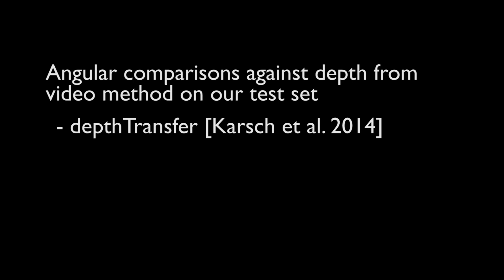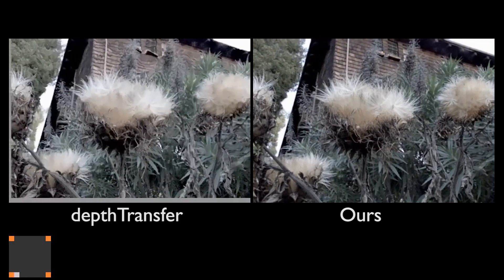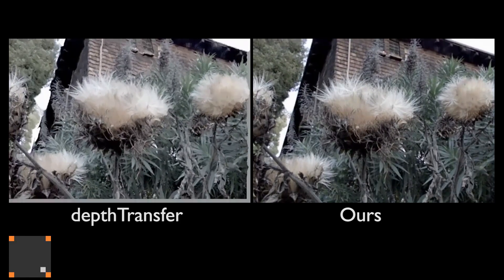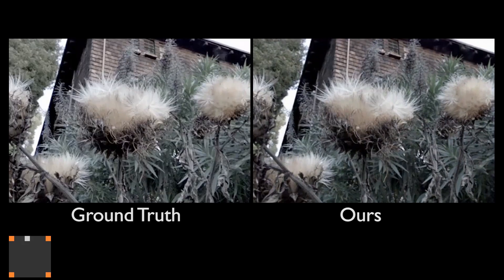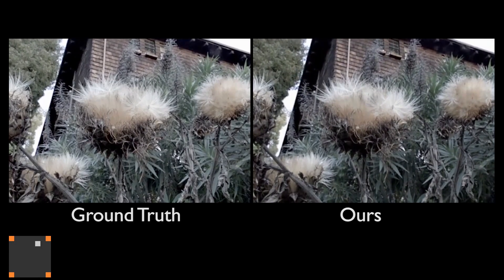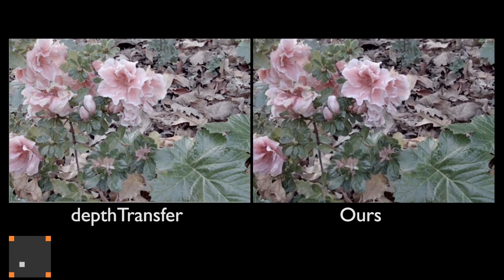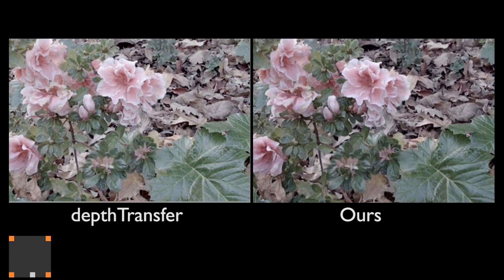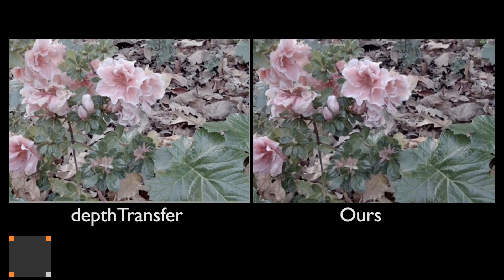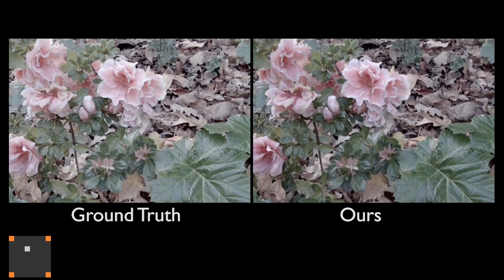Next, we show angular comparisons against depth transfer on our test set, where we have ground truth. Note that the results by depth transfer contain visible artifacts, while our results are very similar to the ground truth. In this scene, note that depth transfer just shifts the images up and down and left and right, while our method captures the true parallax similar to the ground truth.